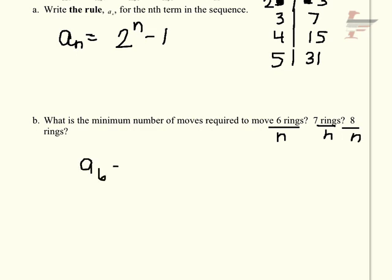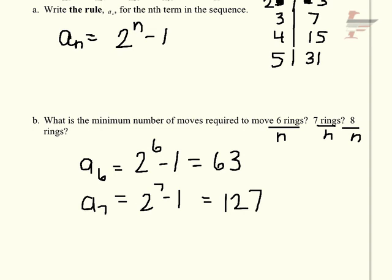So a_6 would be 2^6 minus 1, and that's 64 minus 1, which is 63. a_7 is 2^7 minus 1, and that's 128 minus 1, so 127.